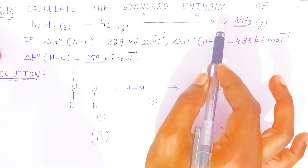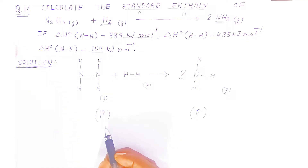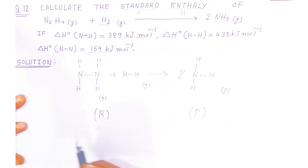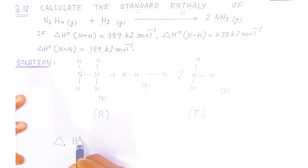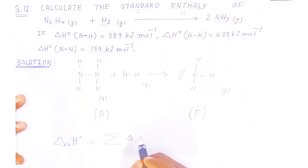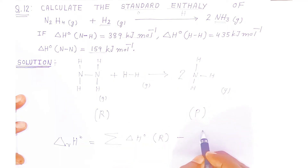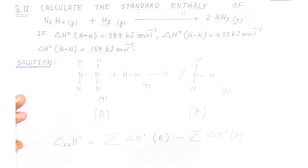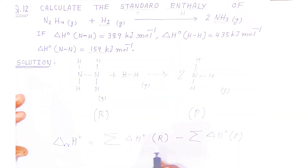To find the standard enthalpy of reaction when bond enthalpies are given, the formula is: standard enthalpy of reaction equals the sum of all bond enthalpies of reactants minus the sum of all bond enthalpies of products.